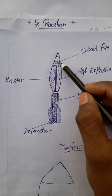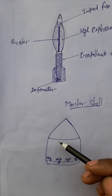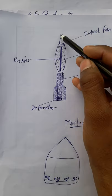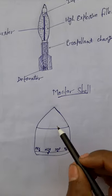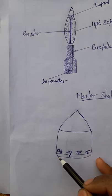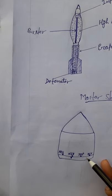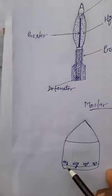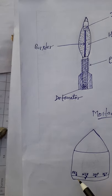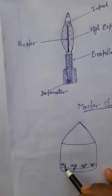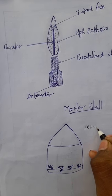The mortar shell has a set of readings or fuse settings: PRX, NSB, IMP, and NDLY. What is PRX? PRX means proximity. If the mortar shell is set on PRX and the target and mortar shell are within 300 mm distance, then the mortar shell is blasted at that proximity.